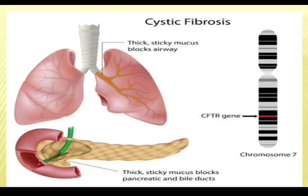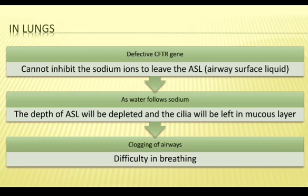In this image, you can see the blocked areas due to thick and sticky mucus in the lungs, and blocked pancreatic ducts and bile ducts because of thick and sticky mucus. What actually happens in the lungs during cystic fibrosis? When there is a defective CFTR gene, the CFTR not only allows chloride ions to drop from the cell to air surface liquid, it also inhibits the channel which allows sodium ions to leave the air surface liquid. Since water follows sodium, the depth of the air surface liquid will be depleted and the cilia will be left in the mucous layer, causing clogging of airways and difficulty in breathing.